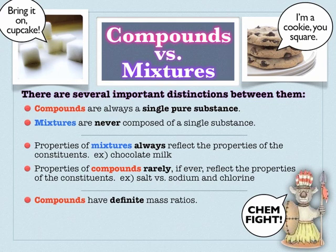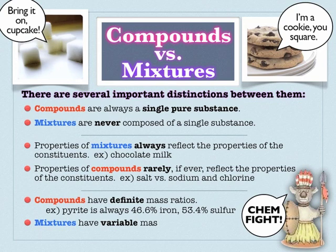Compounds have a definite mass ratio based on their chemical formulas — you are always going to see them in the exact same mass ratio. Sodium and chlorine in salt are going to have a specific ratio, and iron and sulfur in pyrite are also going to have a specific ratio.